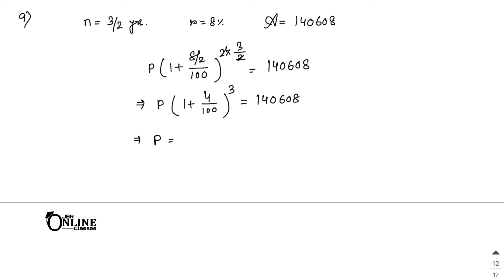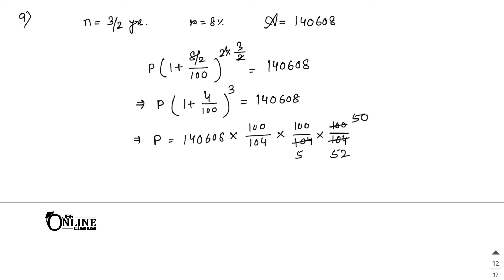So P equals 14,060.8 into (100/104) cubed. Simplifying 100/104, we get 50/52 three times. Now 14,060.8 divided by 52 equals 2,704; again divided by 52 equals 52 — and 52 cancels. So your final answer is P equals rupees 12,500.